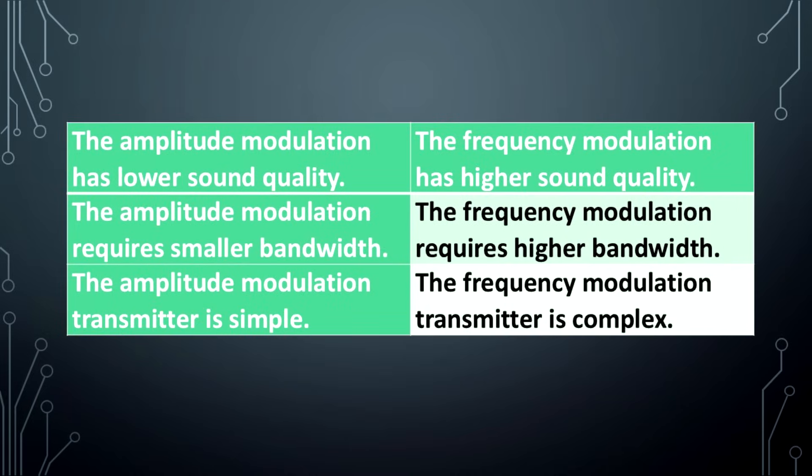Amplitude modulation has lower sound quality. Frequency modulation has higher sound quality. Amplitude modulation requires smaller bandwidth; frequency modulation requires higher bandwidth.